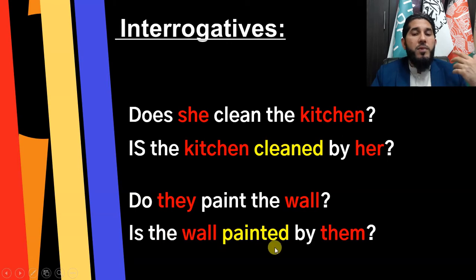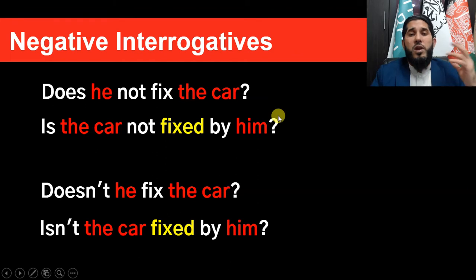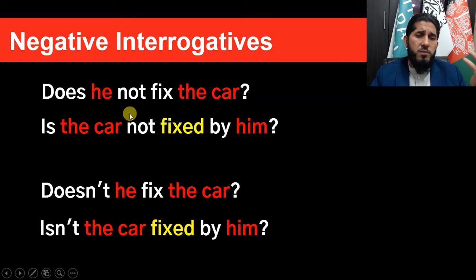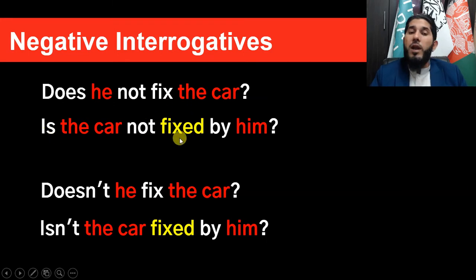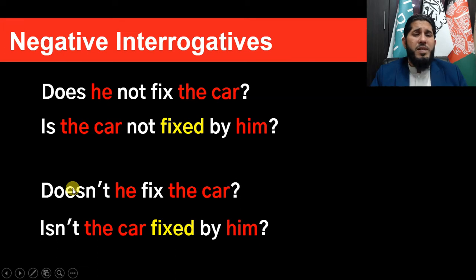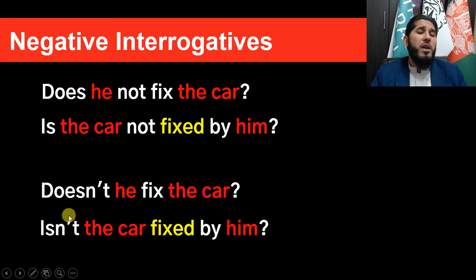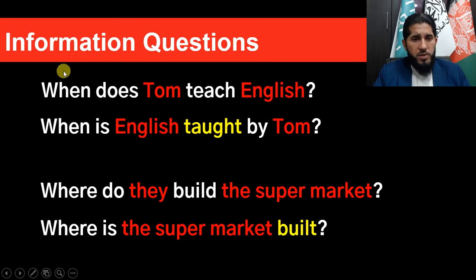For negative interrogatives, the complete formal form is: 'Does he not fix the car?' — subject comes before 'not.' To change to passive: 'Is the car not fixed by him?' The short form of negative interrogatives is very common in daily spoken English: 'Doesn't he fix the car?' and in passive form: 'Isn't the car fixed by him?'